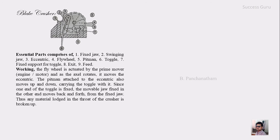The working principle of the Blake crusher: the flywheel is actuated by a prime mover — either an engine or a motor. As the axle rotates, it moves the eccentric, and the pitman attached to the eccentric also moves up and down, carrying the toggle with it. Since one end of the toggle is fixed and the other end is connected to the movable jaw, the movable jaw moves front and back, and thus any material lodged in the throat of the crusher will break up.